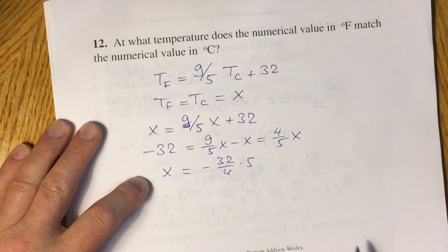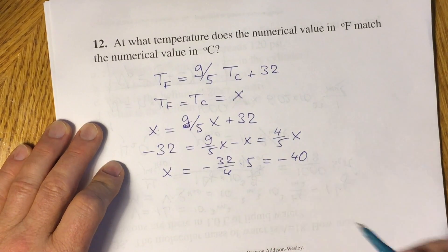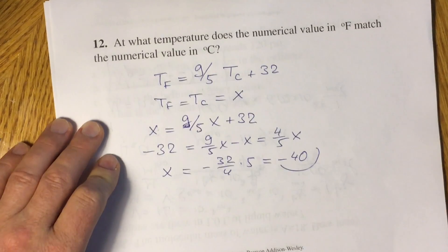Multiply by 5, and you will have negative 40. Negative 40 degrees Celsius is exactly the same as negative 40 degrees Fahrenheit. We solved this problem.